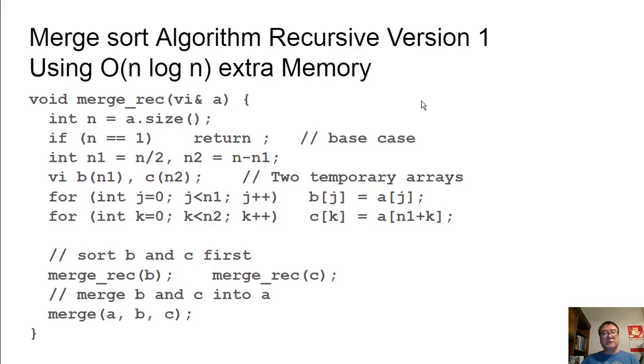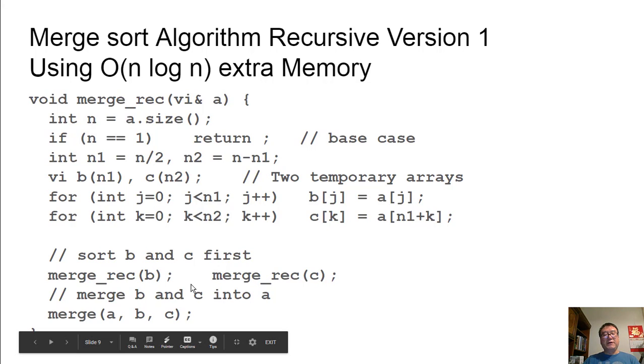Let's look at the code. First, I want to show the version that uses n log n extra memory because it's conceptually easy to understand. After this, then we'll show how to reduce the amount of extra memory from n log n to just big O n. The base case is when we are trying to sort an array with one element, we simply return. Otherwise, we divide this into two halves. And we create two temporary arrays, B and C. Together, they have the same size as A. Then we initialize B and C by copying the first half of A into B and second half of A into C. After that, we just recursively sort B and C. And then finally, we merge B and C into A.